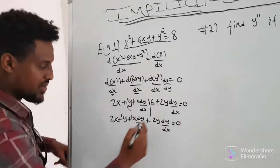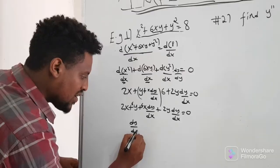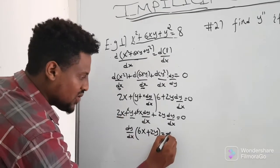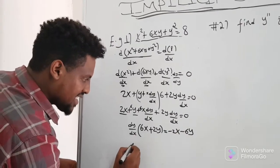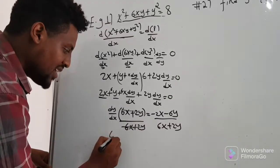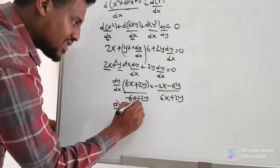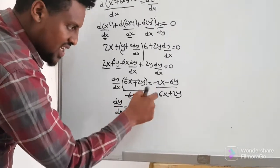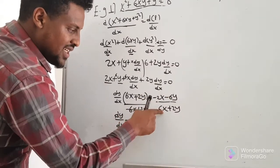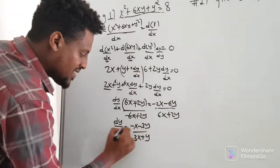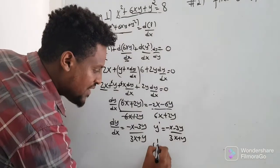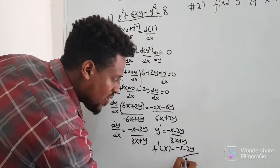So 6x dy by dx plus 2y dy by dx equals negative 2x minus 6y. Factoring: dy by dx times (6x plus 2y) equals negative 2x minus 6y. Therefore, dy by dx equals negative (x plus 3y) over (3x plus y), which we can also write as minus x minus 3y over 3x plus y.